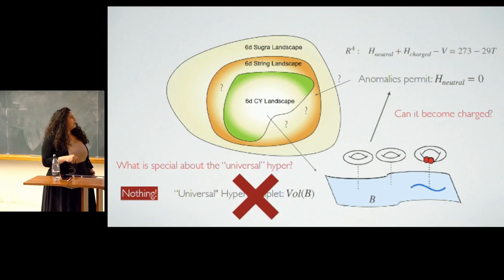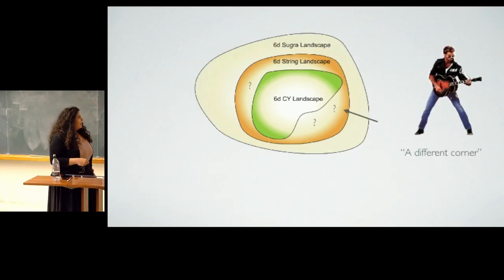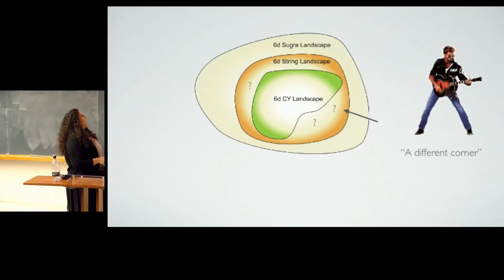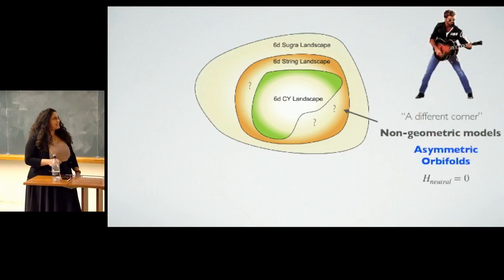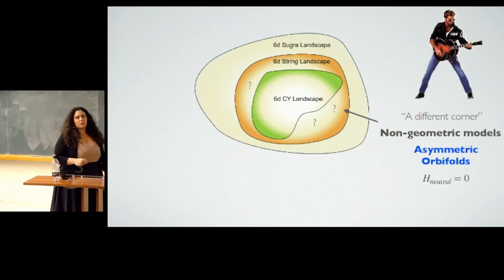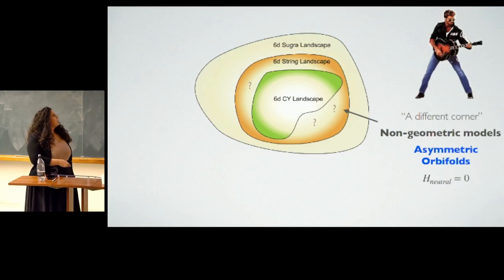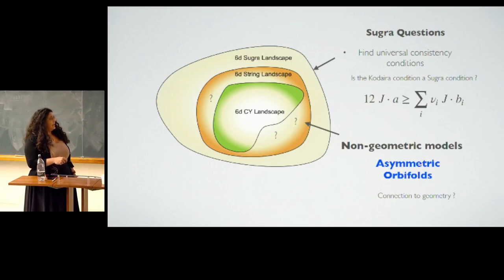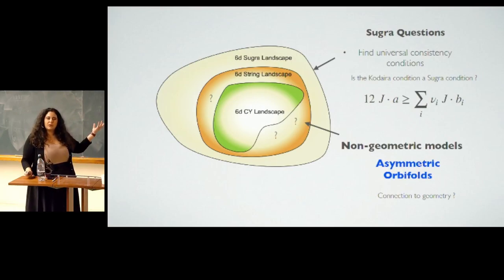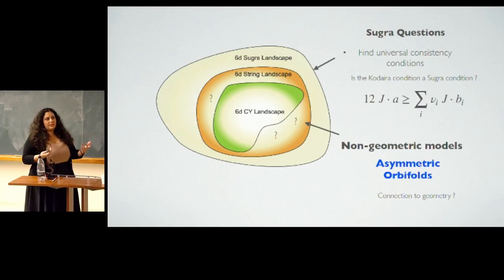A question you could then ask is: if I have this universal hypermultiplet in these models, is there a way I can go on this Higgs branch and have it get charged? Going back to the 80s with the song A Different Corner — this brings us to asymmetric orbifold constructions. This is old news, but what is new and interesting is that you can still find new things with old methods. We're asking whether we can have, in 6D, theories that violate this condition that all geometric theories satisfy — checking also brane constructions — where nothing violates it because, in a duality frame, you end up in F-theory and they're satisfied.